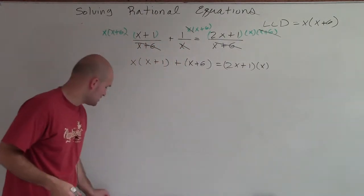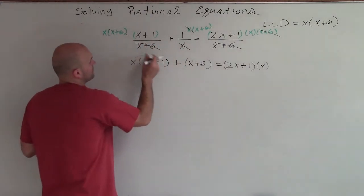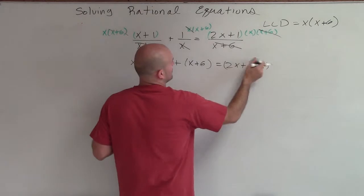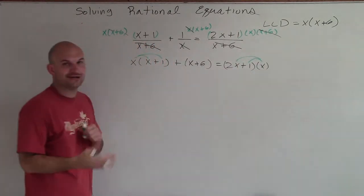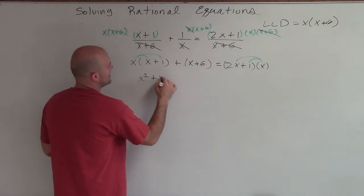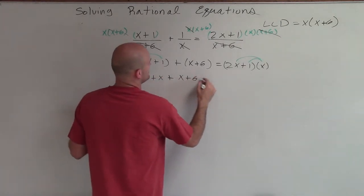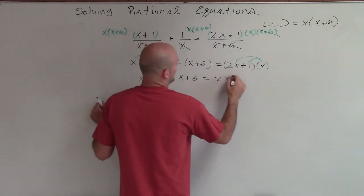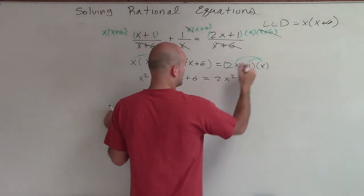So now, I can make sure I apply my distributive property. It doesn't matter which way you're multiplying, right or to the left. You just distribute. So I have x squared plus x plus x plus 6 equals 2x squared plus x.